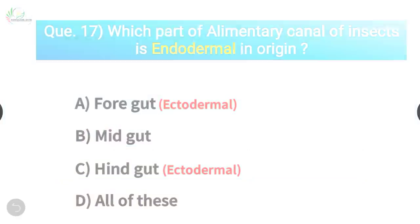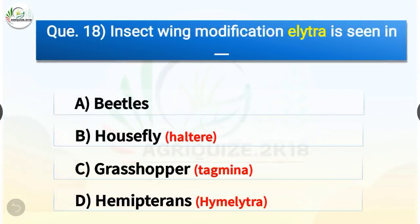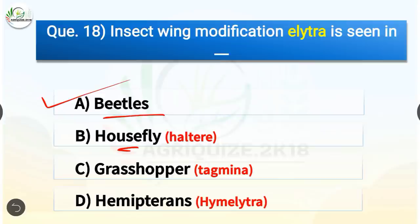Question number 18. Insect wing modification elytra is seen in which insect? The options are beetles, housefly, grasshopper, or hemipterans. The correct answer is option A, beetles. Elytra is seen in beetles, whereas halteres are seen in housefly. Tegmina wing modification is seen in grasshopper and hemipterans, and hemelytra is seen in hemipterans.